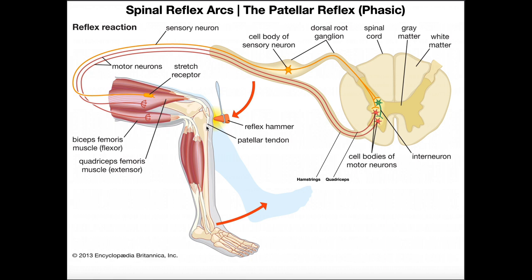When you strike the patellar ligament, it stretches the muscle spindles in the quadriceps and produces a quick stretch. These receptors sense that quick stretch and relay the information into the spinal cord. Following this axon in orange, it enters the spinal nerve and then the dorsal root ganglion — this is the cell body of this muscle spindle neuron. The proximal axon projection goes from the cell body in the dorsal root ganglion into the dorsal root and then into the spinal cord.